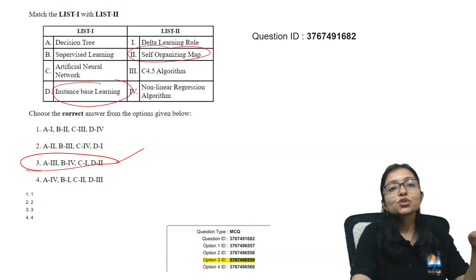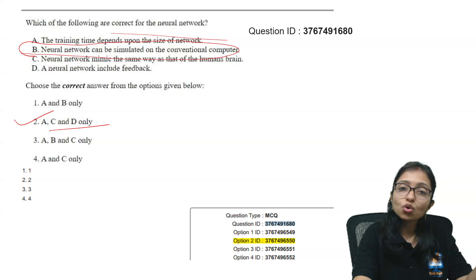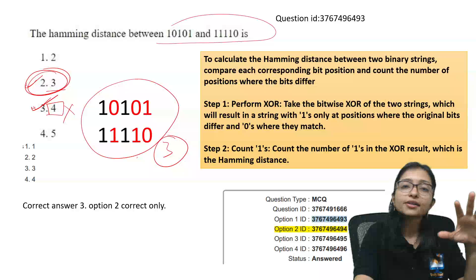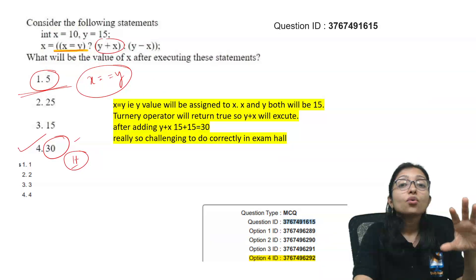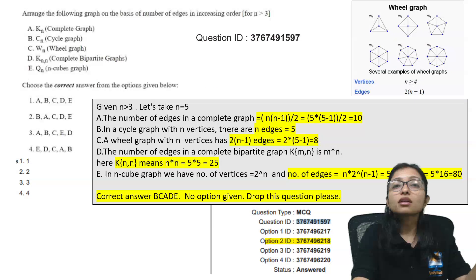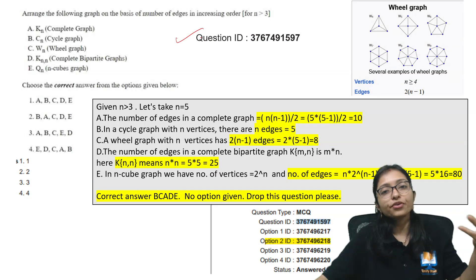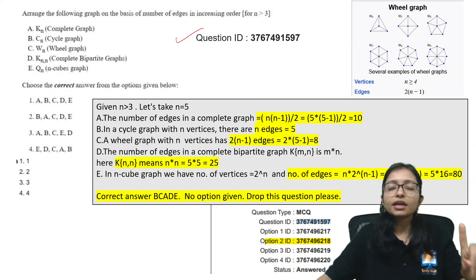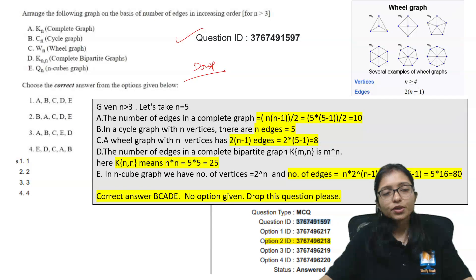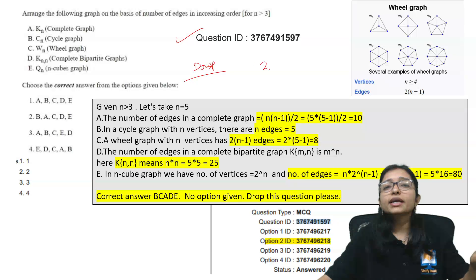This type of problem happens. I gave you examples of where you got confused — all these questions came to me, and that's why I'm telling you why your marks went down. Now I will tell you which questions you can definitely challenge. I will also provide the PDF in the Telegram channel so you can download it and use it to challenge. This first question is definitely wrong — none of the options is correct — so it will be dropped definitely.